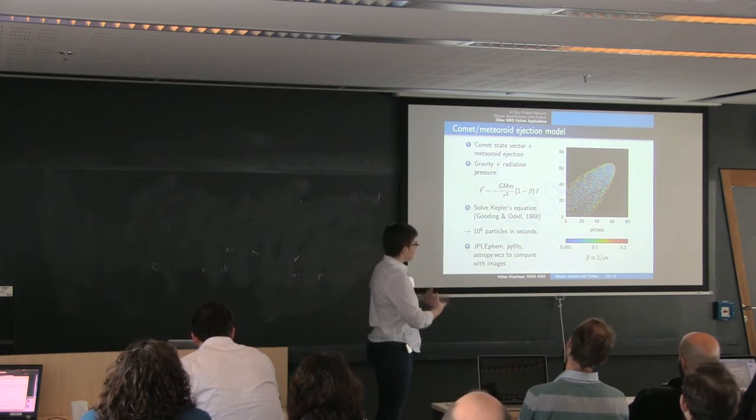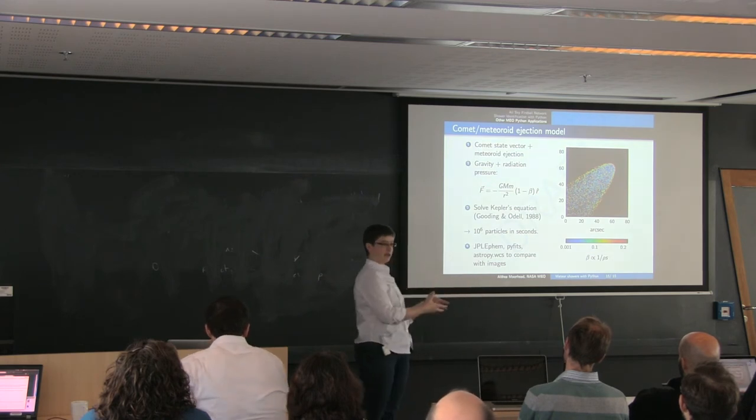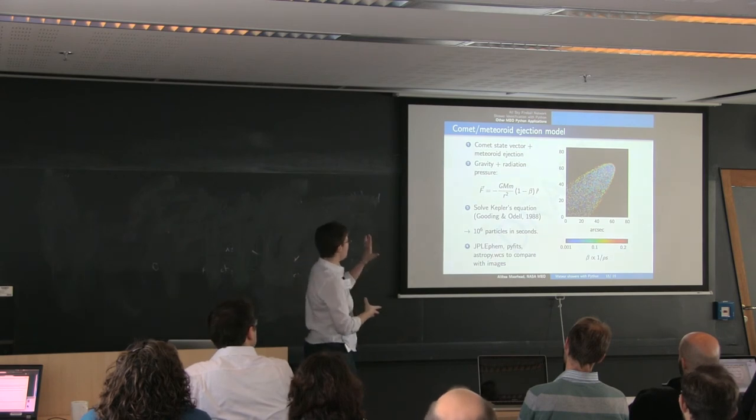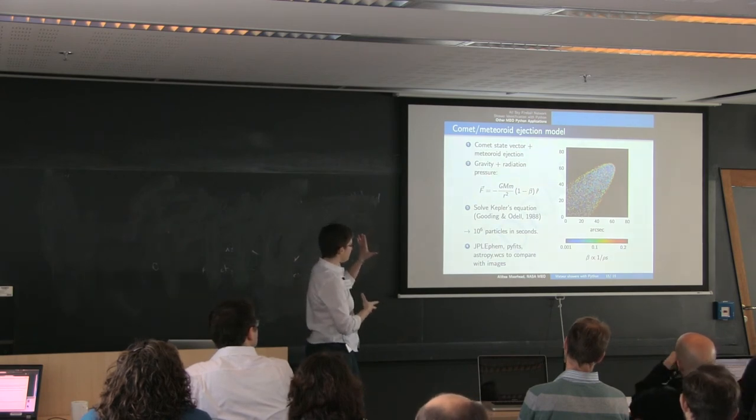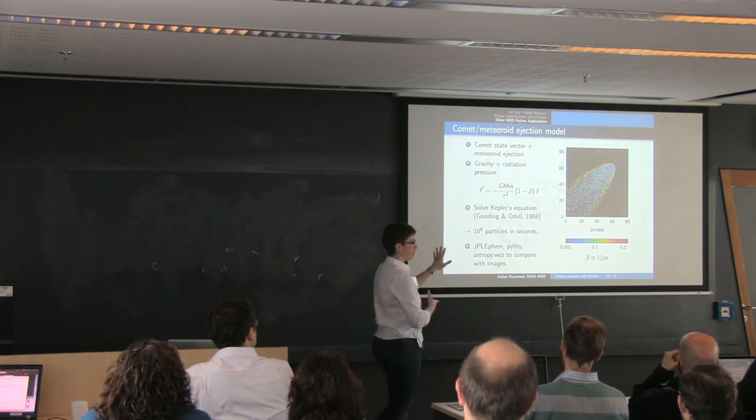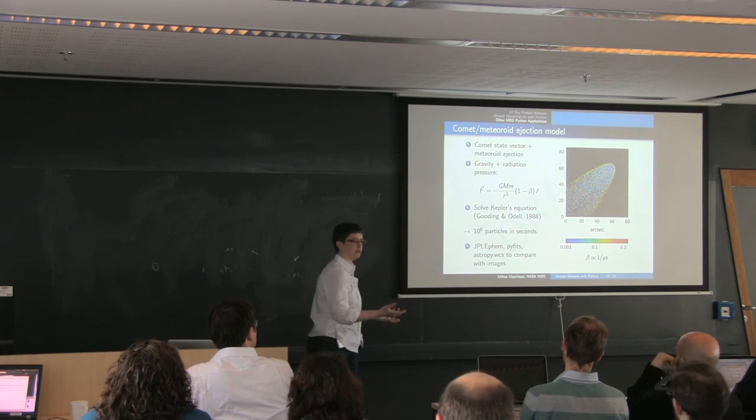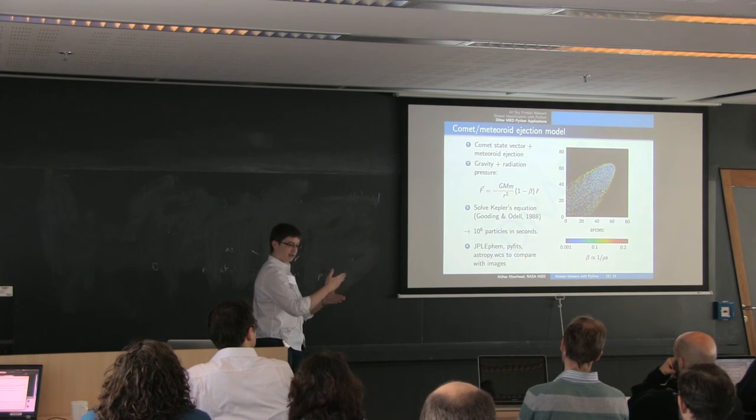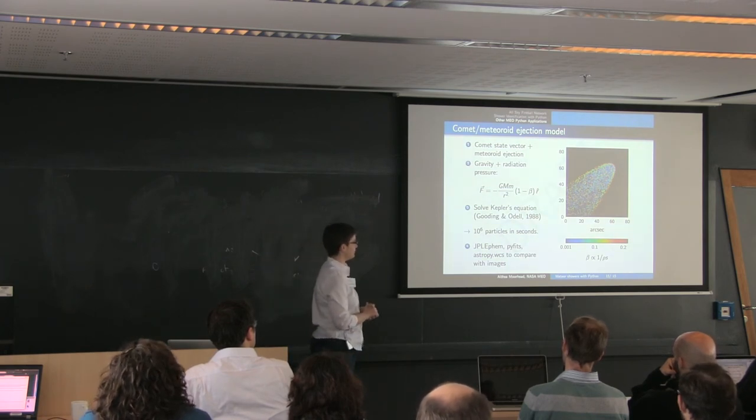And comparing them with images. So we regularly monitor meteoroid producing comets. You can do this all in Python rather than using an n-body integrator, where as long as you have the comet state, or the comet ephemeris, you eject particles from that. And then you have the velocity of the ejection added onto the comet state vector.